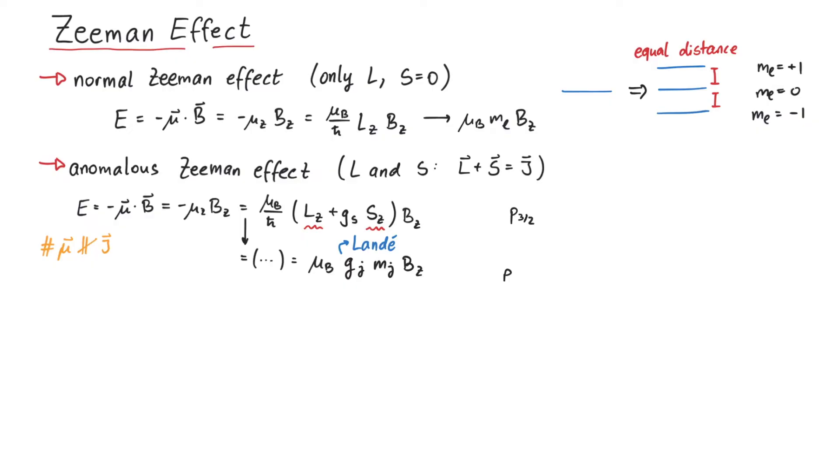Therefore, the line splitting is not equally separated as with the normal Zeeman effect. For example, for electrons in the p1-half and p3-half states, the lines will split like this, where the splitting for the p1-half state is larger than for the p3-half state.